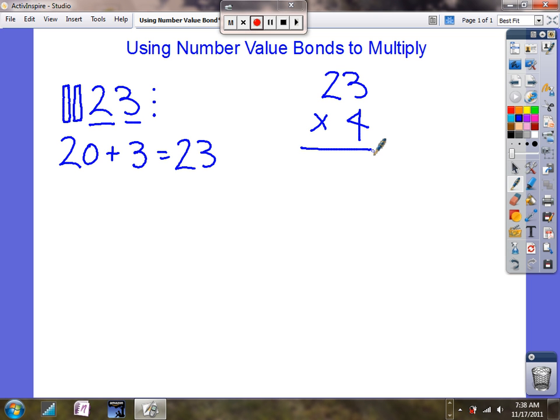First, I'll break it into number bonds, and then I'll multiply each value by 4. As I did before a second ago, 20 plus 3 was the value bond for 23. So, here I want to take the 4 on over, and I want to multiply the 4 to each value.